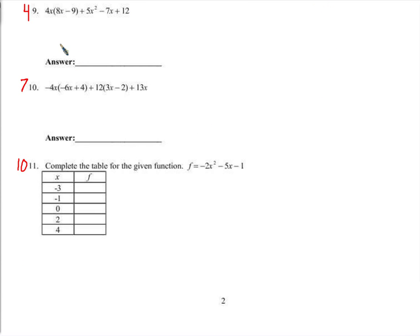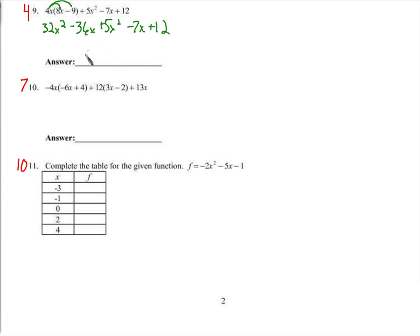Number nine: distributing a 4x into these parentheses. We get 4x times 8x is 32x squared, 4x times negative 9 is negative 36x, plus 5x squared minus 7x plus 12. So 32x squared plus 5x squared is 37x squared. Negative 36x minus 7x is negative 43x, and then plus 12.